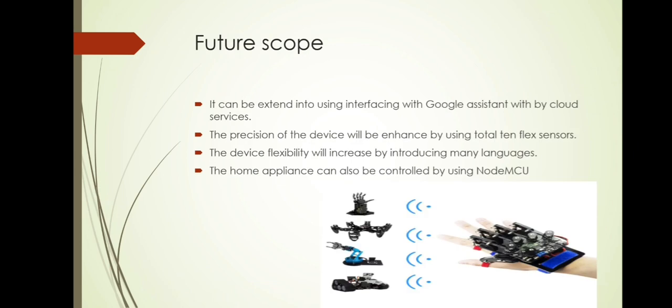And the last, future scope. It can be extended by using interfacing with Google assistant with cloud services. The precision of the device will be enhanced by using total 10 flex sensors. The device flexibility will increase by introducing many languages like Hindi, Telugu, etc. The home appliance can also be controlled by using NodeMCU.